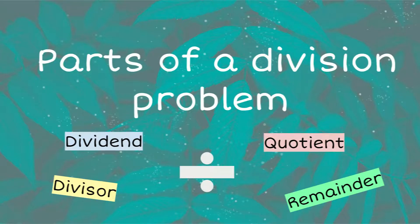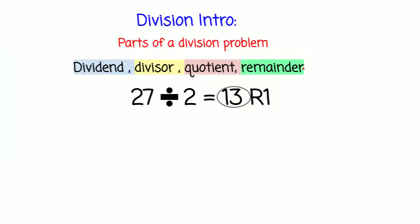Hi, today we're going to be learning about the parts of a division problem. Let's get started. The vocabulary words we're going to be learning about today are dividend, divisor, quotient, and remainder. The equation we have for today's explaining problem is 27 divided by 2 equals 13 remainder 1, or R1.